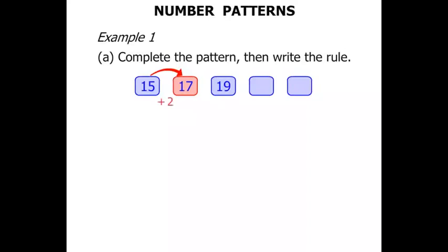Well to do that we add 2. Now from 17 to 19 again we add 2. So to go from 19 to the next number we're going to add 2. And 19 plus 2 is 21.